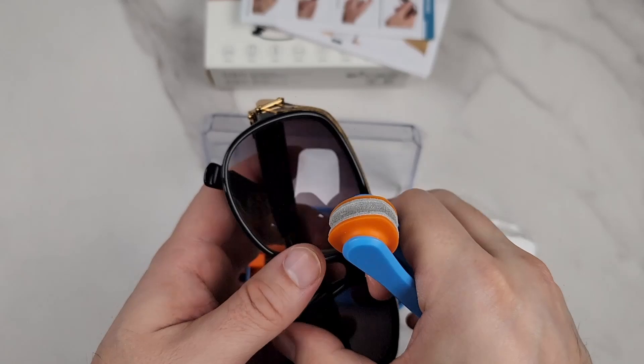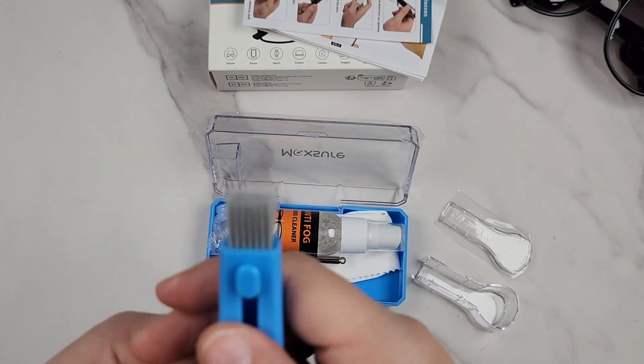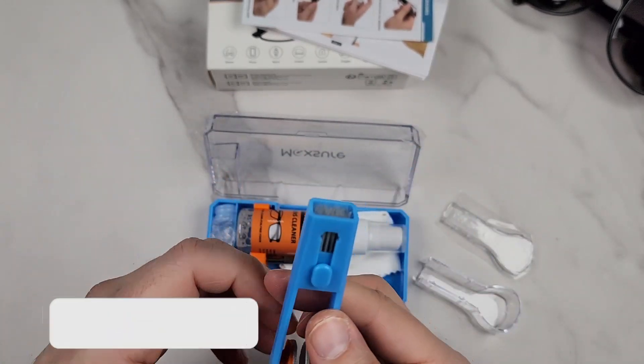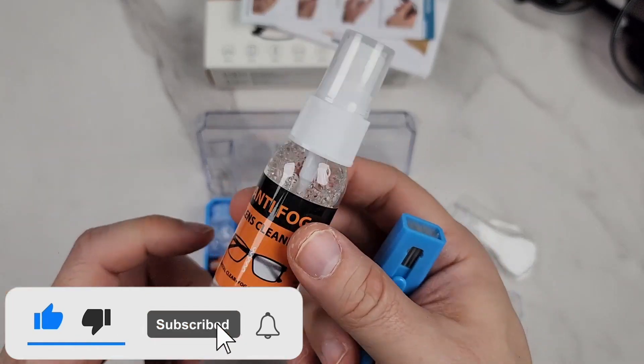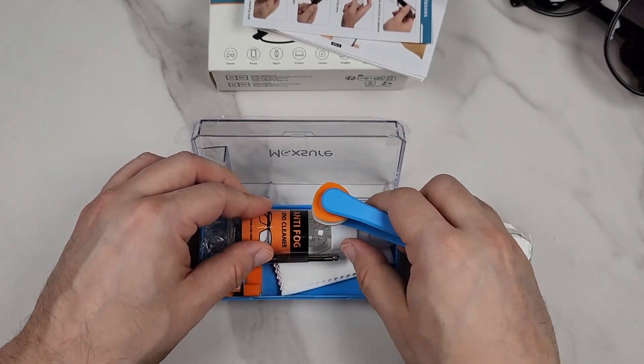This is just like tongs. On the opposite end you get a nice brush. If you have debris on your glasses, you first dust off the debris, then you spray with the anti-fog lens cleaner, and then you use the squeegee for your glasses.